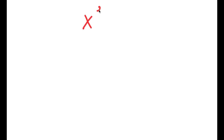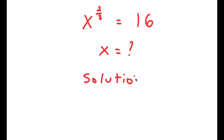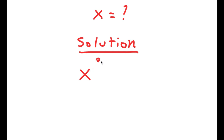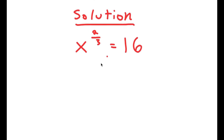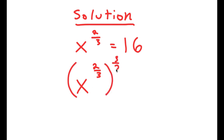In this equation I have x to the power of 2 over 3 is equal to 16. My only variable is x, so that's what I'm solving for. I'm going to rewrite the equation down here for more space: x to the power of 2 over 3 is equal to 16. What I'm first going to do is take the power of 3 over 2 on both sides. So I have x to the power of 2 over 3 to the power of 3 over 2 is equal to 16 to the power of 3 over 2.